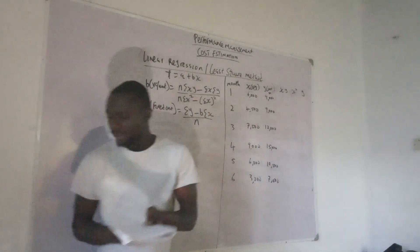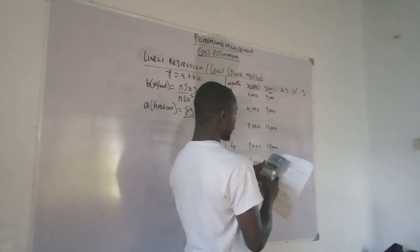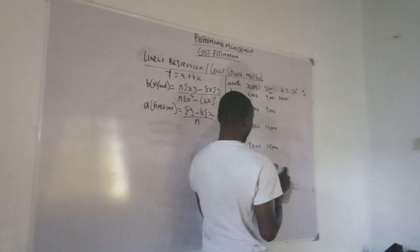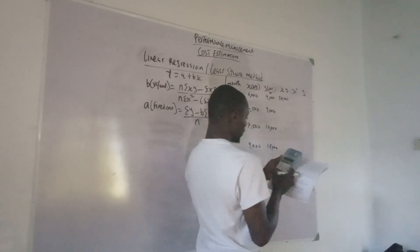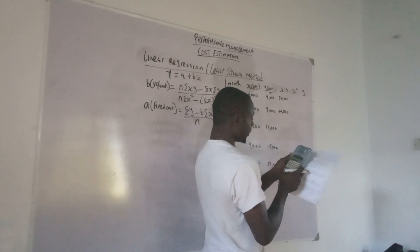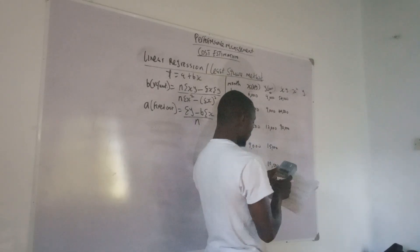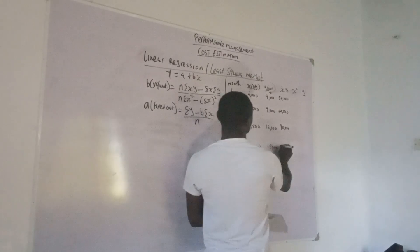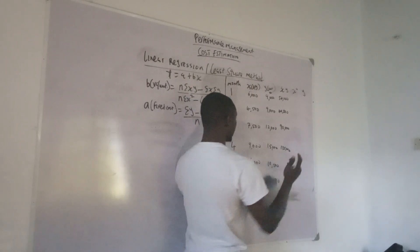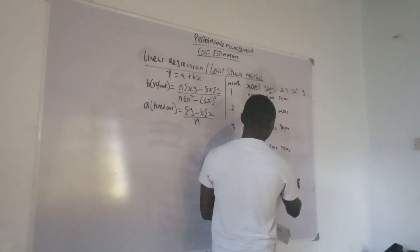Now calculating the xy column: 6 times 9 is 54; 4.5 times 9 is 40.5; 7.5 times 12 is 90; 9 times 15 is 135; 10.5 times 6 is 63; and 7.5 times 3 is 22.5.